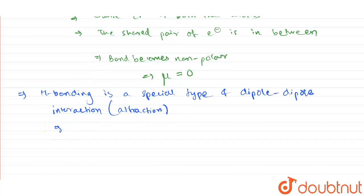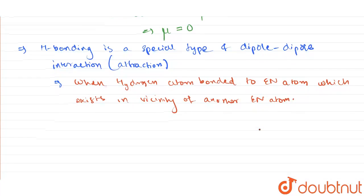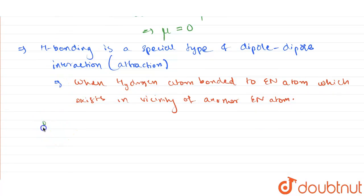And this arises when hydrogen atom is bonded to electronegative atom which exists in vicinity of another electronegative atom. So in this case, hydrogen will show hydrogen bonding but chlorine or the chloride ion does not form